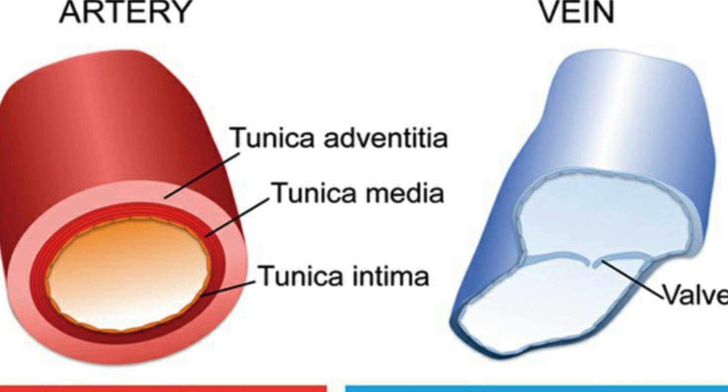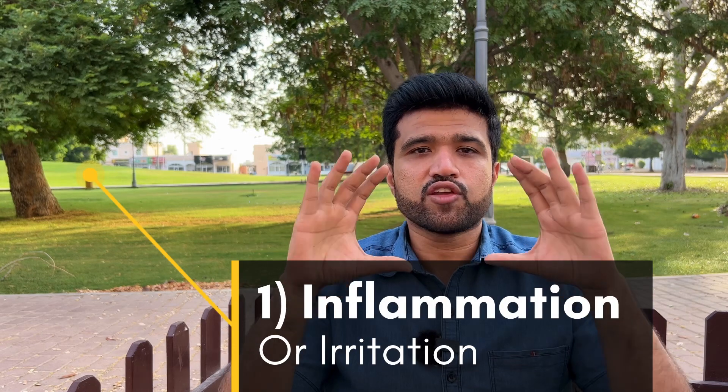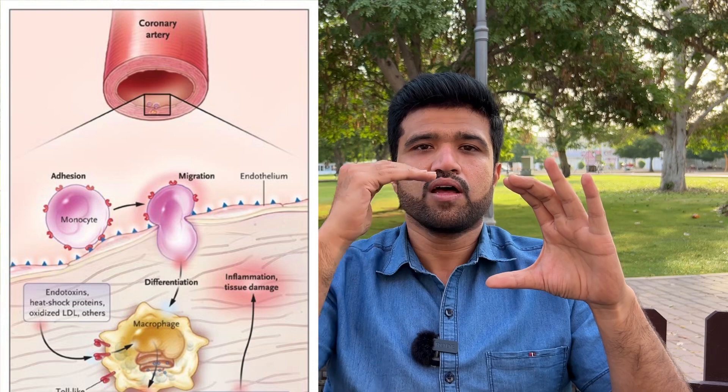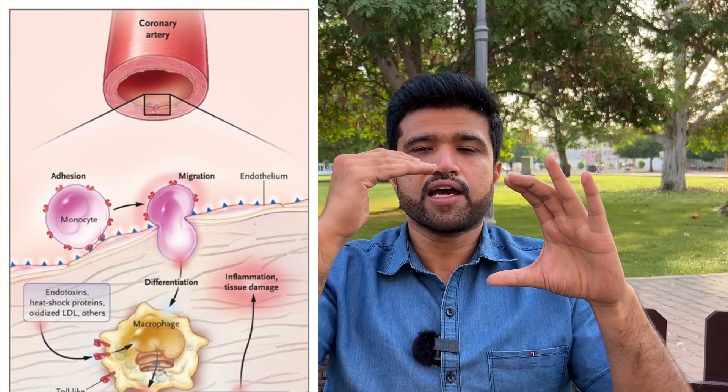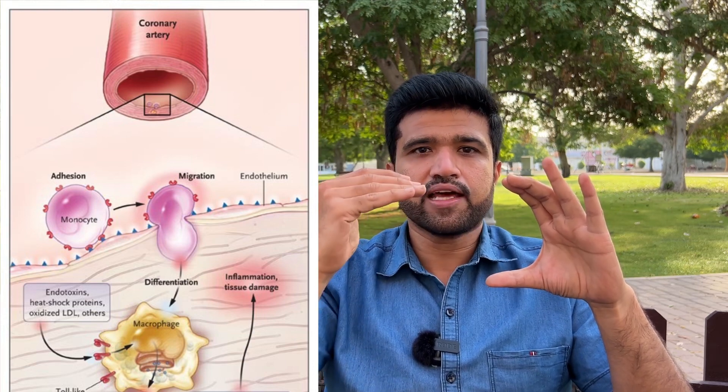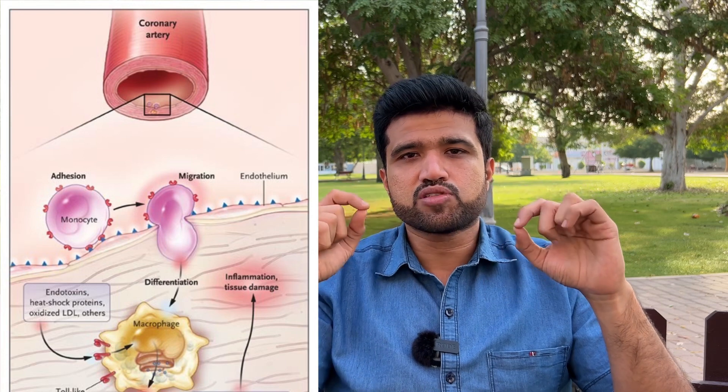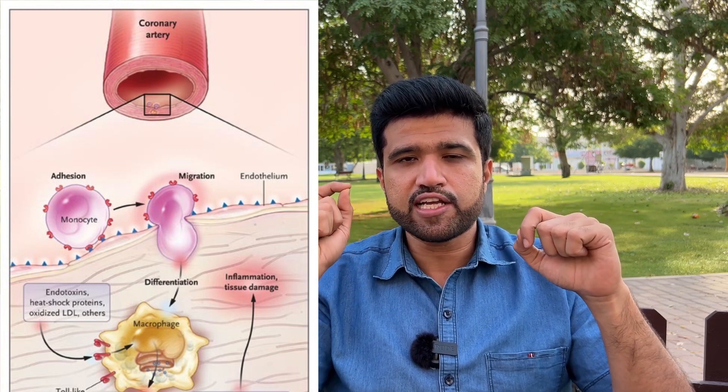The process of heart attack or stroke is starting in the arteries. What exactly happens in your arterial system so that blood is not flowing to your organs — not only the heart, but other organs too? The first process is inflammation or irritation, and this starts in your arteries. As I told you, the artery has three layers: intima, inner layer, middle layer, and outer layer. This process of inflammation or irritation will start in the middle or muscular layer.